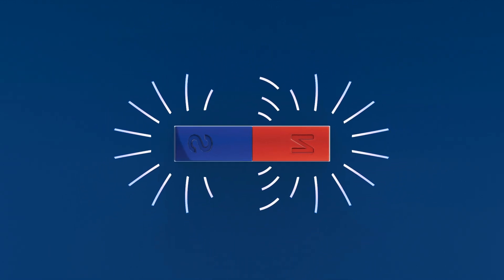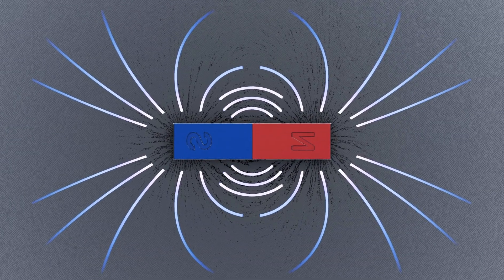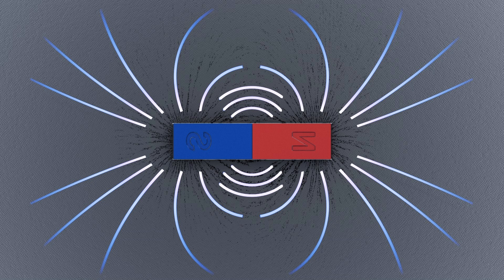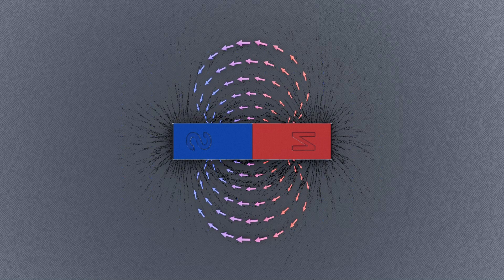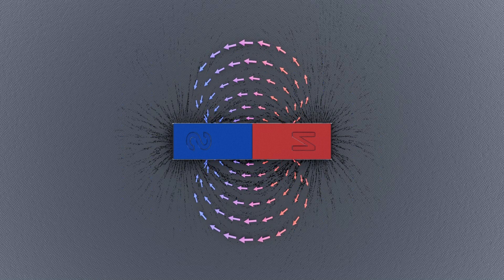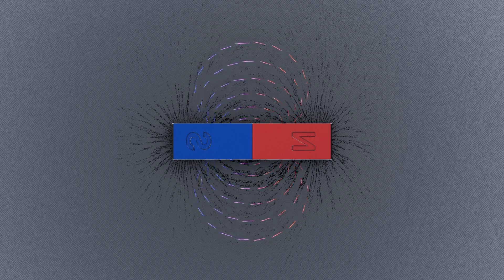This field is invisible, but you can see its effect when iron filings align along the magnetic field lines. The strength and behavior of a magnet are governed by the scientific principle of magnetism, which arises from the motion of electric charges, specifically the spin of electrons within atoms.